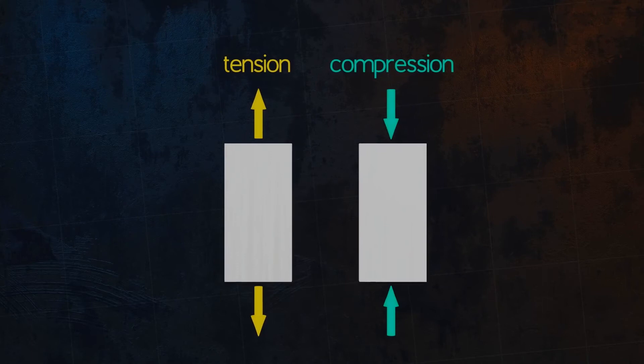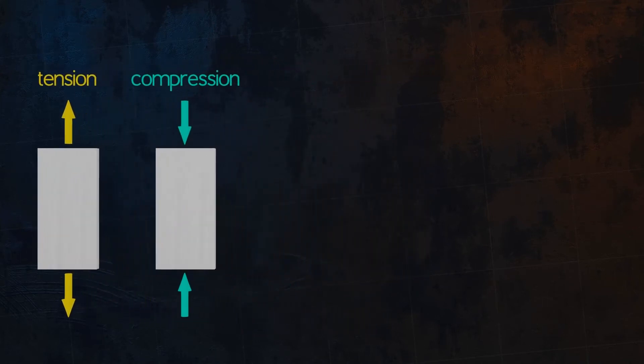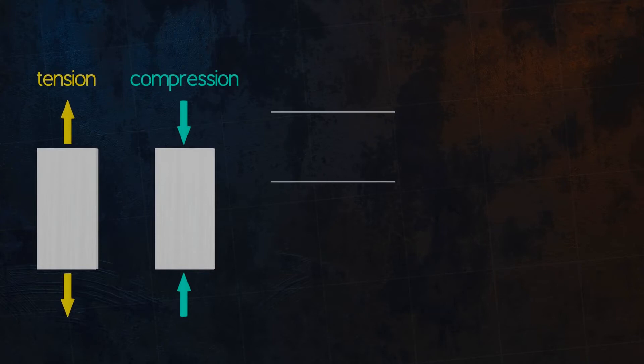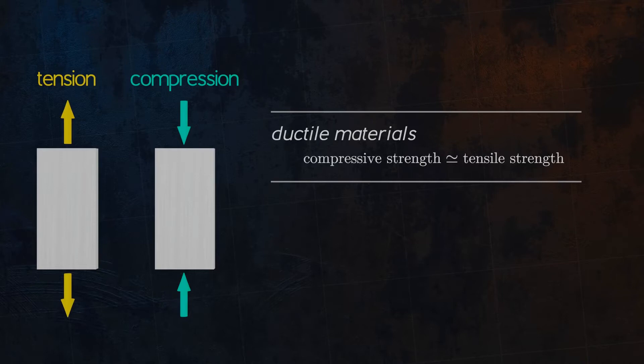Tensile tests are usually easier to carry out than compression tests. And so, compression tests are not often performed for these materials. For brittle materials like concrete, however, the material strength is much larger in compression than in tension.